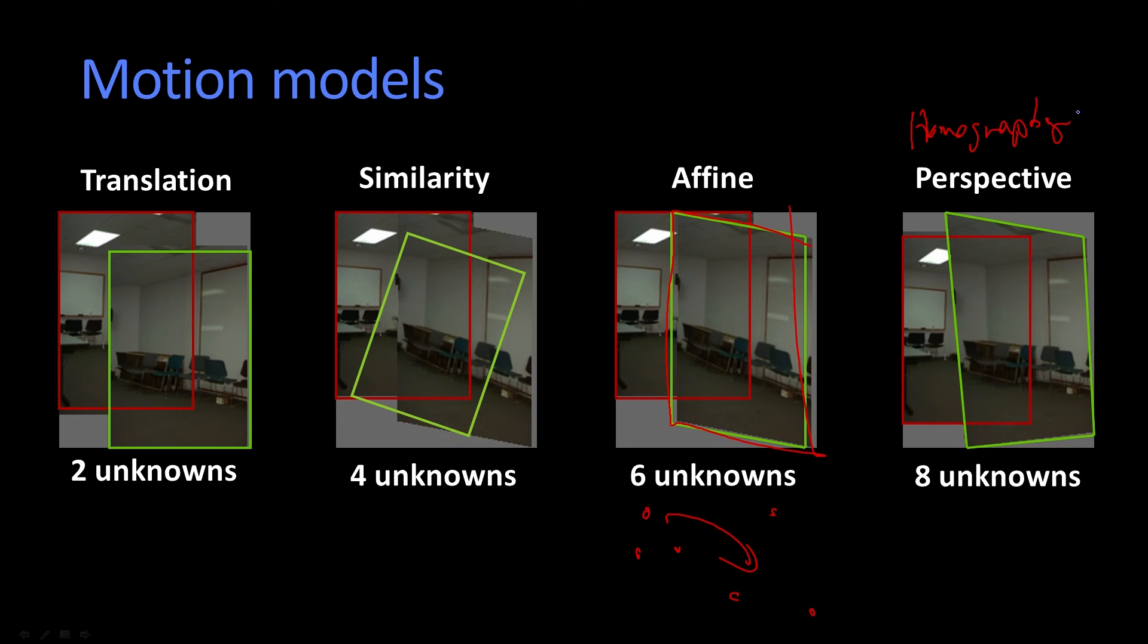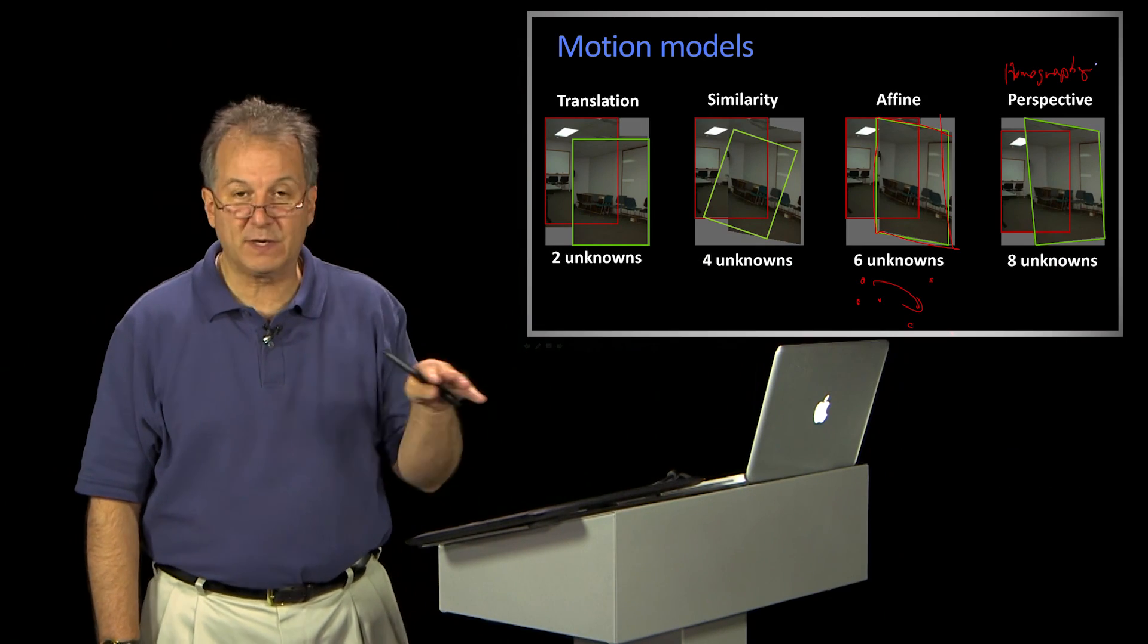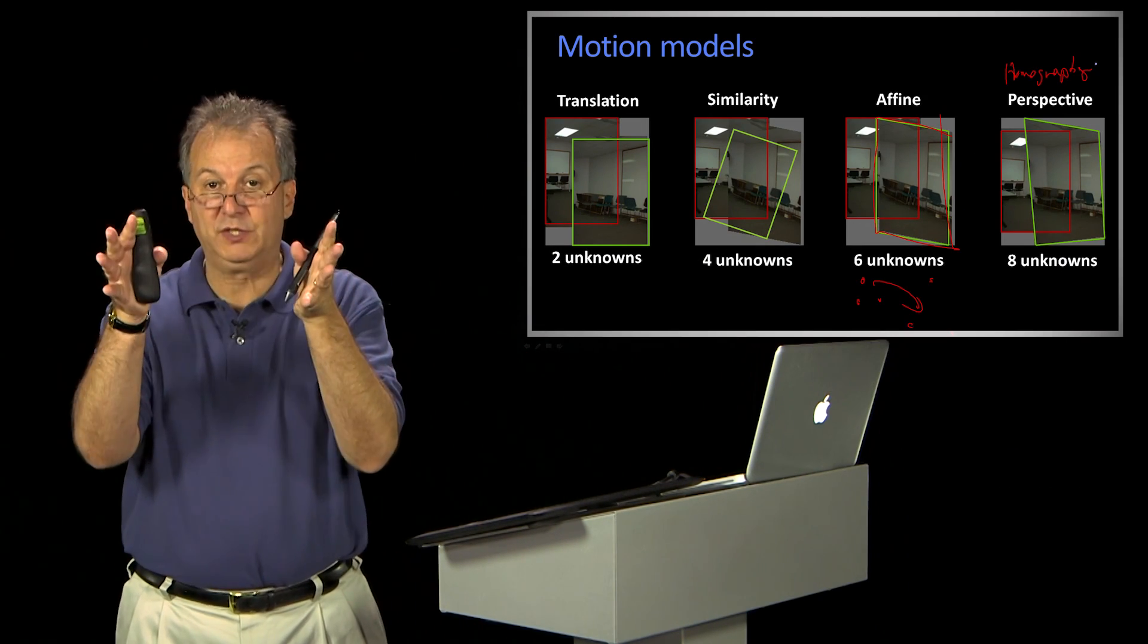And that's because it takes four points, therefore, to recover homography. So each of these can be thought of as transformations or as motions within a region.